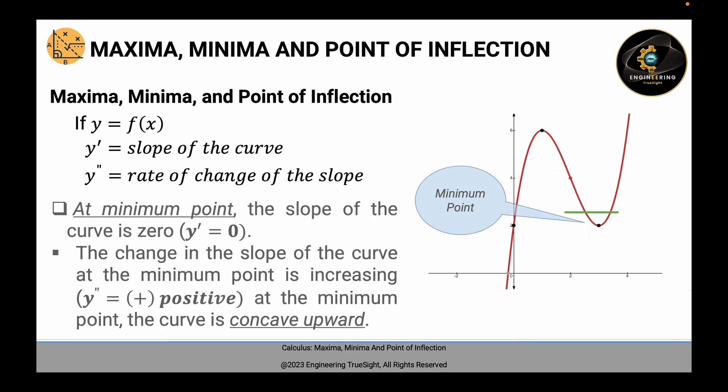At the minimum point, the slope of the curve is 0 — that is, y prime equals 0, as shown in the figure. The change in the slope of the curve at the minimum point is increasing; that is, y double prime is a positive value. At the minimum point, the curve is concave upward.